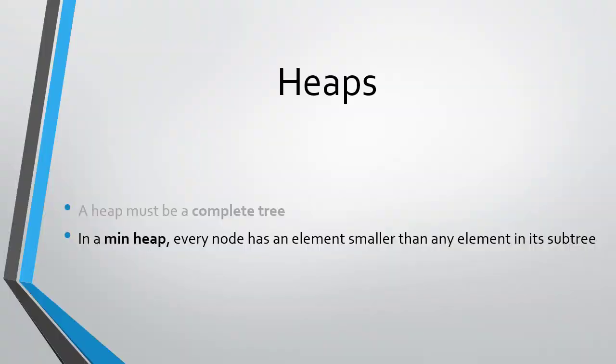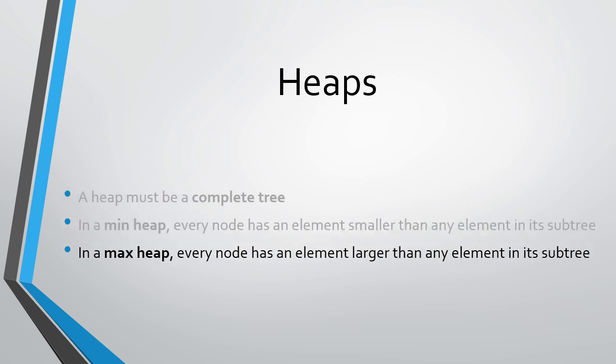In a min heap, every node contains an element that's smaller than any of its descendants — smaller than the left child, the right child, and that continues all the way through the entire heap. For a max heap, every node contains an element that's larger than any element in its subtree. So depending on which type of heap we have, either the min or the max element is at the root, giving us quick access to the smallest or largest element in a collection.